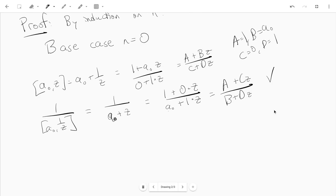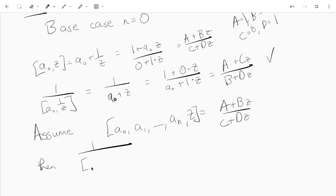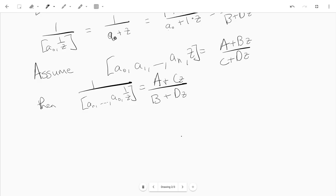So now we do inductions. We assume that if I write a0, a1 up to an as a plus bz over c plus dz, then 1 over an down to a0, 1 over z is 1, a plus cz divided by b plus dz. Now we have to show that the same is true with one additional term, so up to a n plus 1.